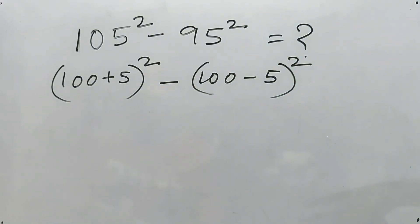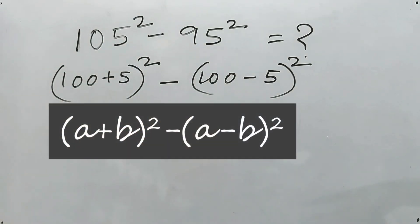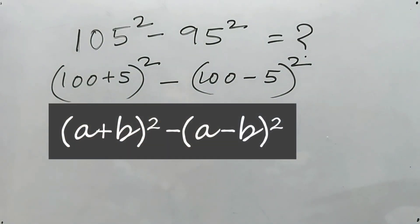Now, can you remember one thing? There's a formula: a plus b whole square minus a minus b whole square. What's the value of this? This is 4ab.